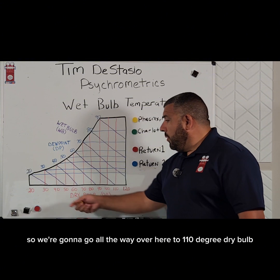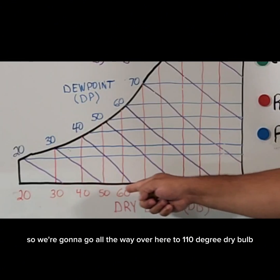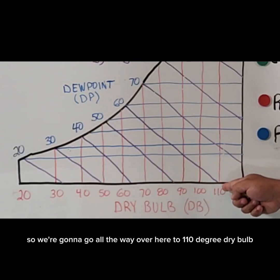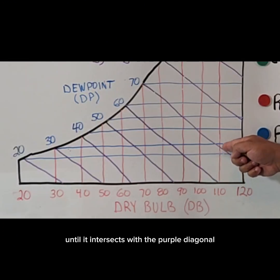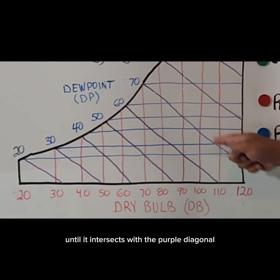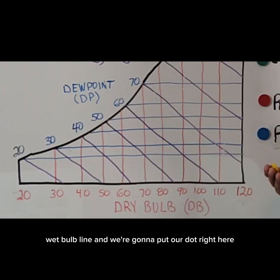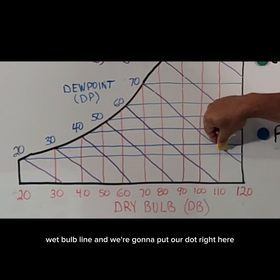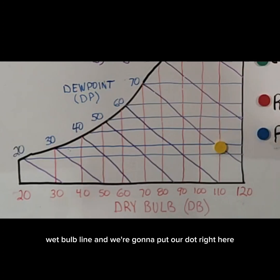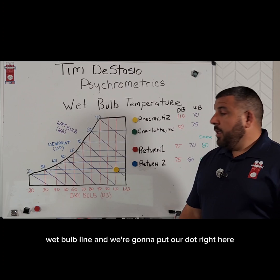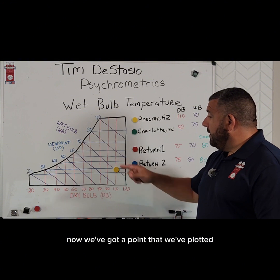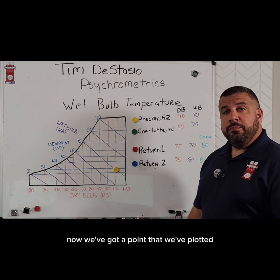We're going to go all the way over here to 110-degree dry bulb, and then we're going to take that line up until it intersects with the purple diagonal wet bulb line, and we're going to put our dot right here. Now we've got a point that we've plotted.